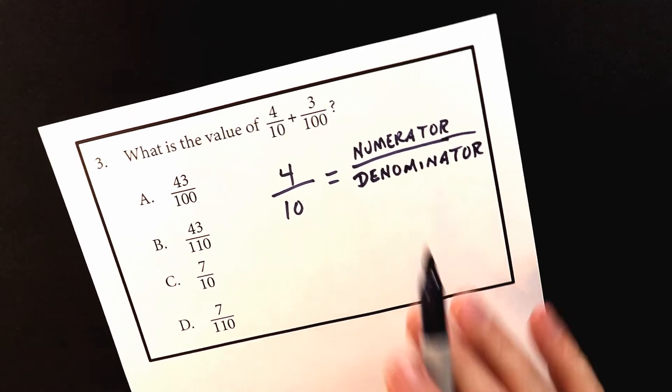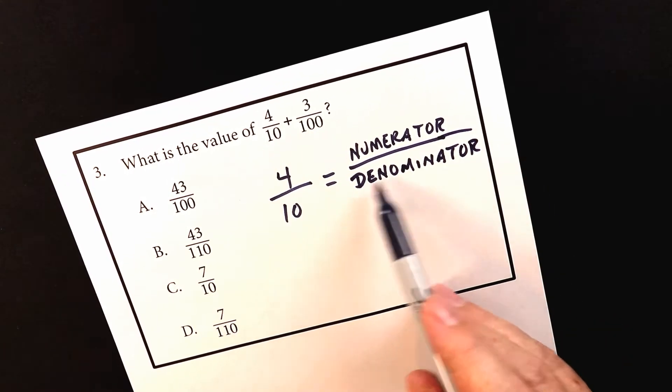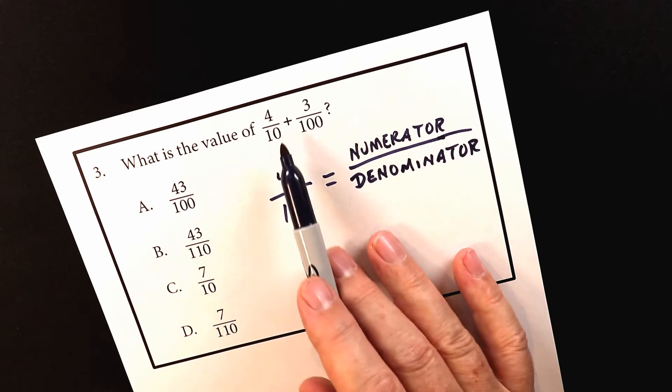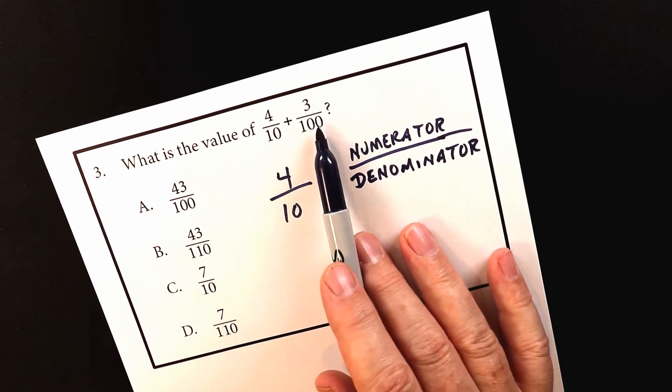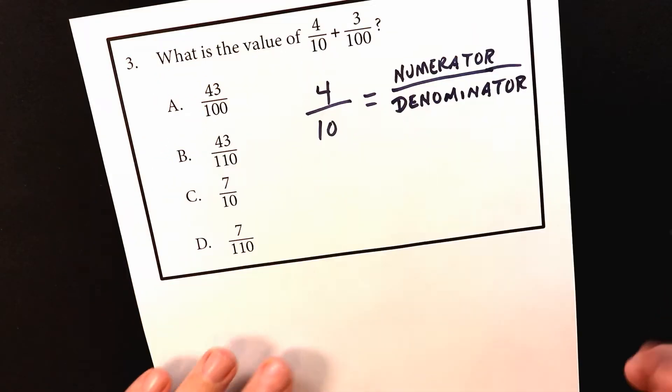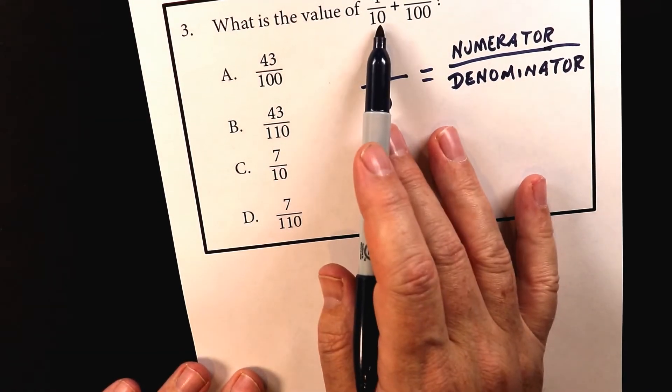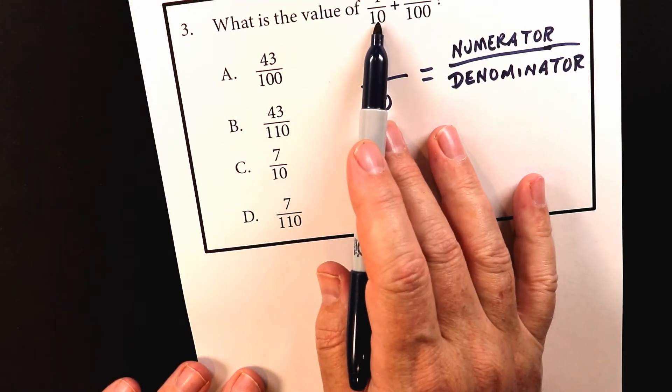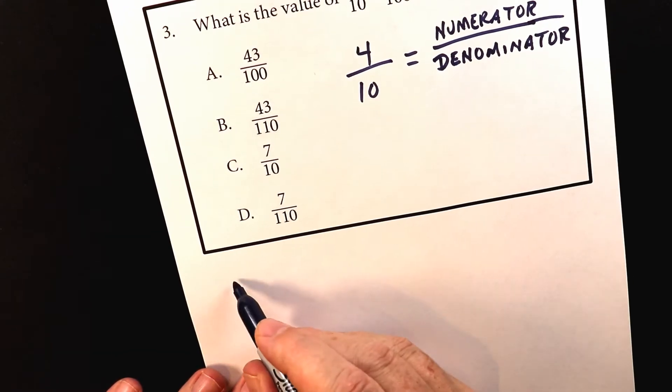Now the next thing we have to remember is that when we're adding fractions the denominator has to be the same number. So I look at the 10 and I look at the 100 and what I want to do is I want to turn this 10 into a 100. So how do I do that? So what I want to do is I want to multiply this number to turn that number into a 100. So let's figure out how to do that.